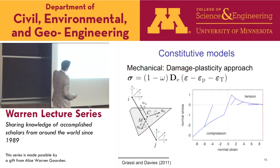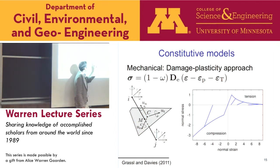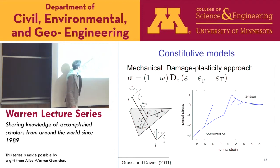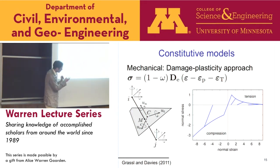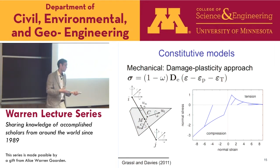For situations where compression interacts with tension, we use a more complicated damage-plasticity constitutive model. This combines damage and plasticity, describing in tension a reduction of stresses and stiffness while retaining permanent strains, and also describing compressive response under normal stresses. In both formulations we have an eigenstrain epsilon_T, which we use later to describe shrinkage in applications - representing thermal expansion or shrinkage effects.